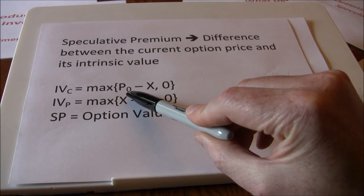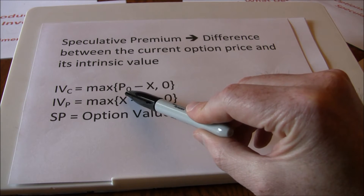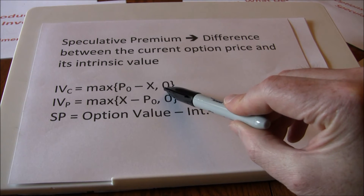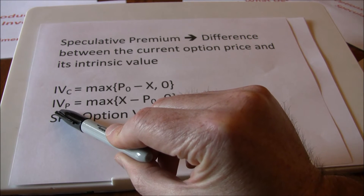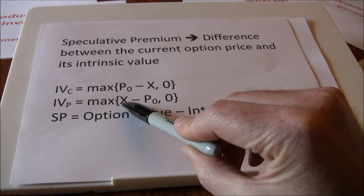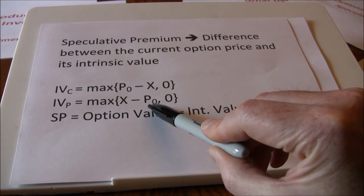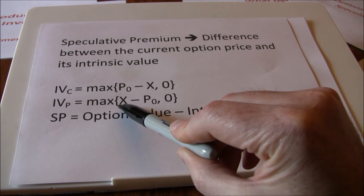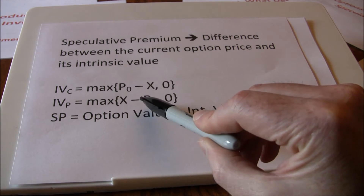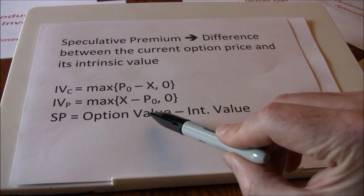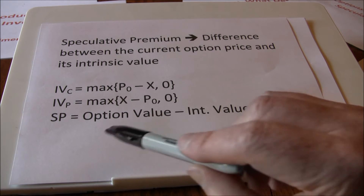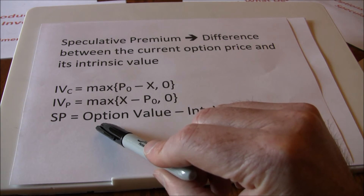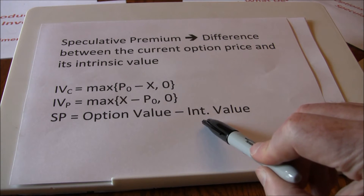So if the current price is greater than the strike price, that's the intrinsic value. If the current stock price is less than the exercise price, the intrinsic value is going to be zero. For the intrinsic value of the put, remember we now have the right to sell the stock, not the right to buy it, so we flip that strike price and stock price around. If we can sell the stock for more than its current price, it's going to have a positive intrinsic value; if not, the intrinsic value is zero. The speculative premium is just the difference between the option value and the intrinsic value.